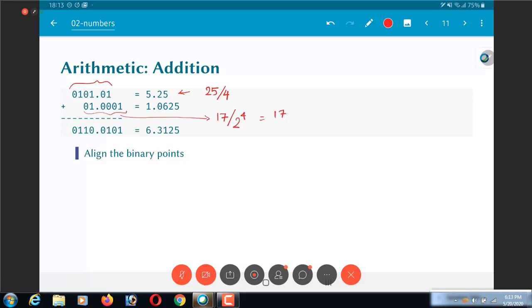And this value is basically equal to 17 divided by 2⁴, that is 17 divided by 16, which is equal to 1.0625, okay.